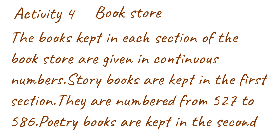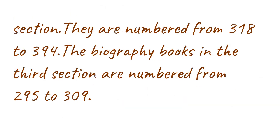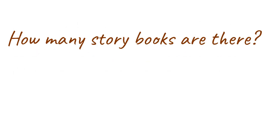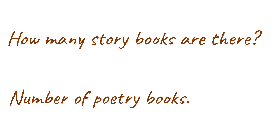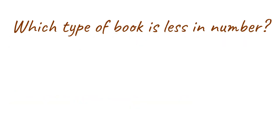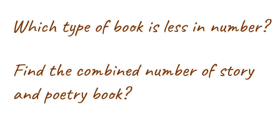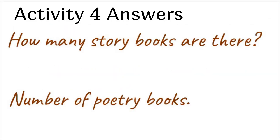Activity 4: Bookstore. The books kept in each section of the bookstore are numbered in continuous numbers. Story books are in the first section, numbered from 527 to 586. Poetry books are in the second section, numbered from 318 to 394. Biography books are numbered from 295 to 309. How many story books are there? How many poetry books? Which type of book has the least number? Find the combined number of story and poetry books.